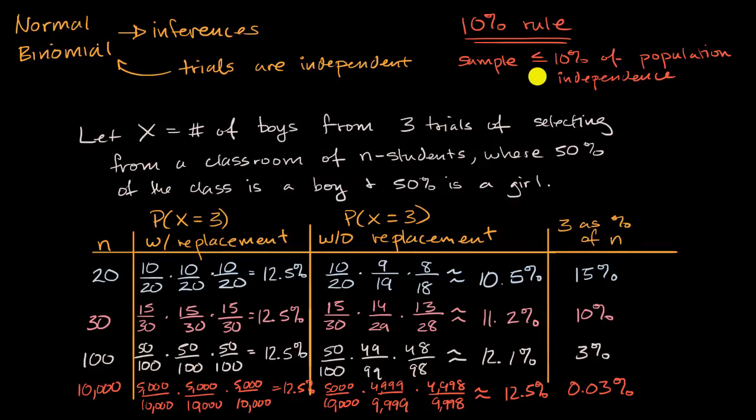And then we could say, hey, does the 10% rule actually make sense? So this first column, where we are picking three boys with replacement, in this case because we are replacing, each of these trials are independent, are truly independent. And if our trials are independent, then X would be truly a binomial variable.